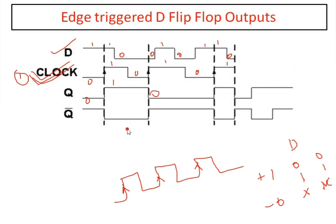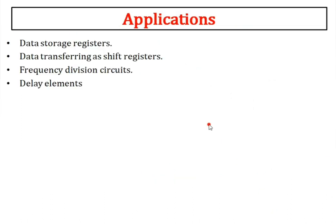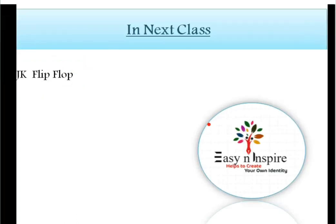In this timing diagram we are taking only positive going triggers; negative going edges do not affect the circuit — it remains in no change condition. Q̄ is the exact opposite of Q: where Q is 0, Q̄ is 1, and vice versa. This is about the timing diagram of the D flip-flop. These are the applications of D flip-flops. In the next session we will discuss about JK flip-flop. Thank you.